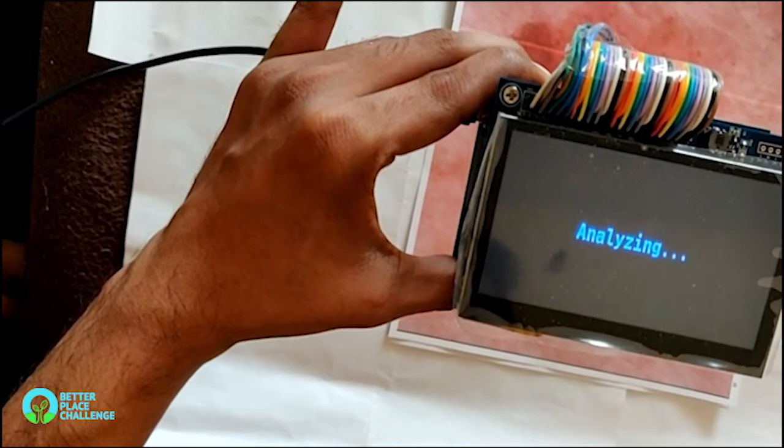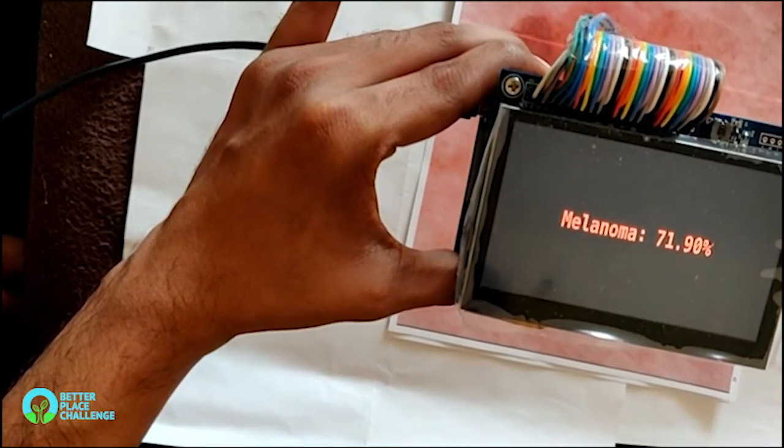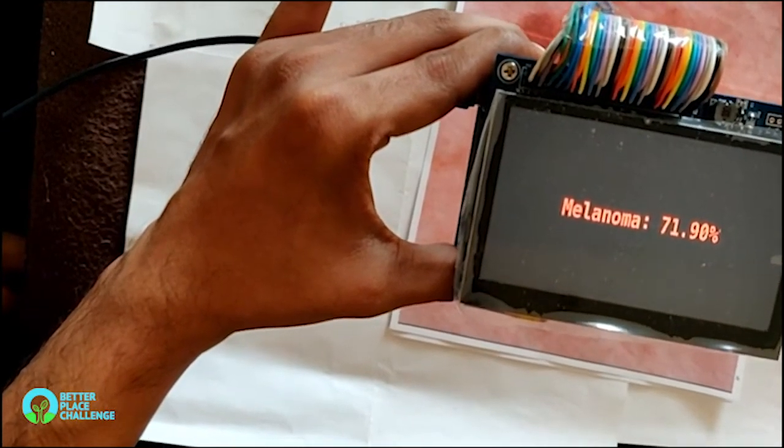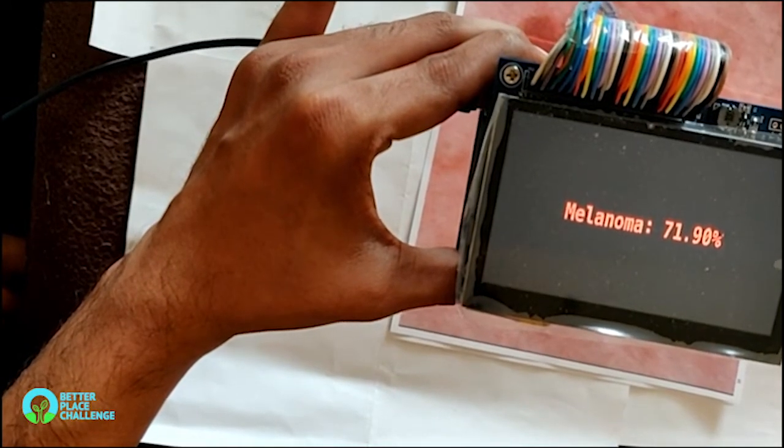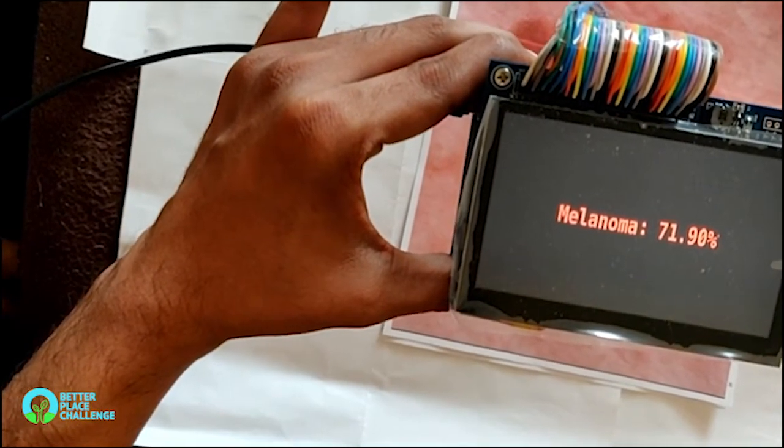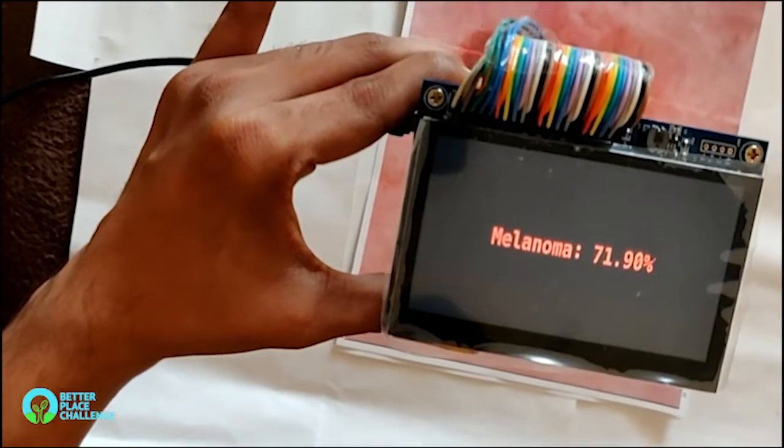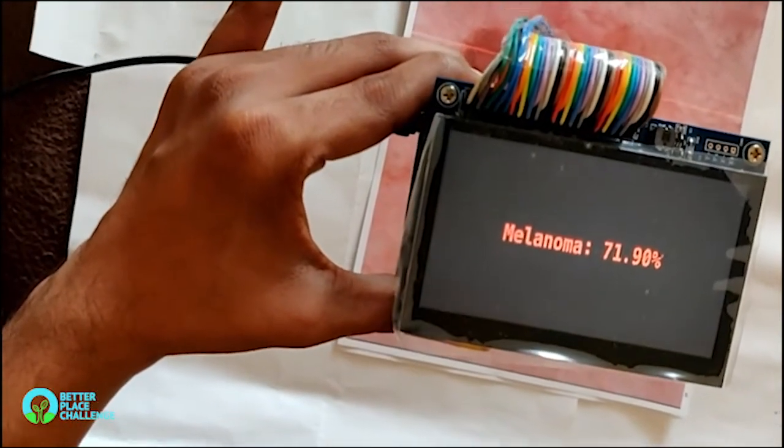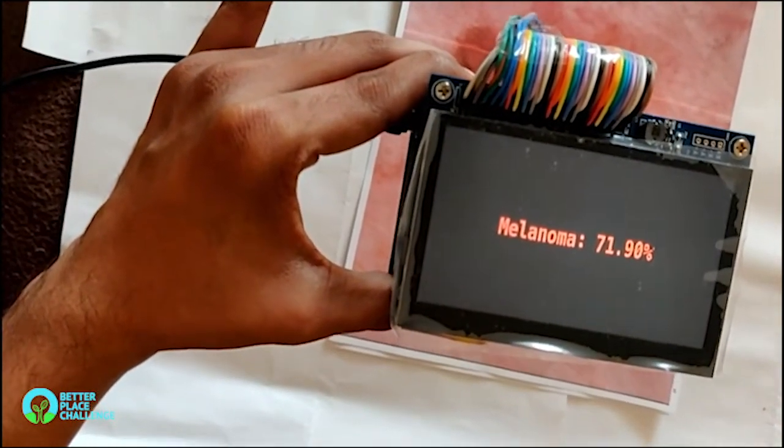This EAI framework is generated using EAI translator by Renesas, and contains four layer convolutional neural networks, which is generated using TensorFlow checkpoint files. Finally, the predict percentage is printed on the LCD screen.